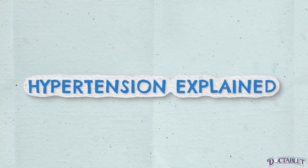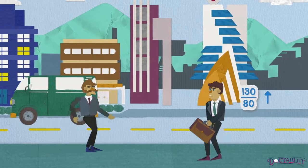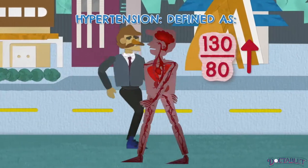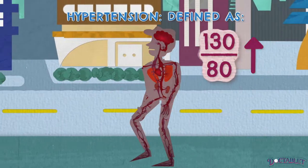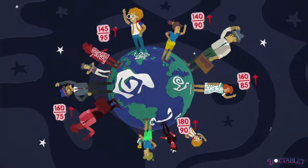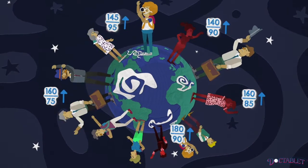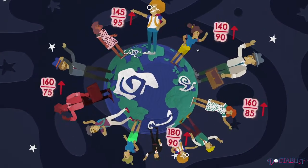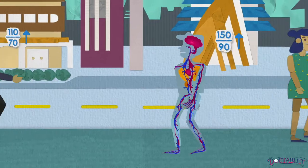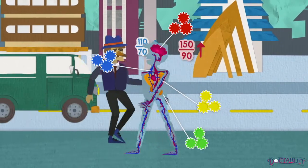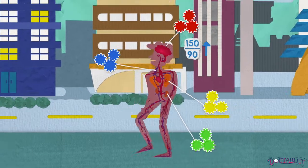Hypertension is a medical condition most recently defined as a persistent elevation in blood pressure above 130 over 80. About a third of the population has hypertension, and the older one gets, the more common it becomes. To understand why hypertension happens, one needs to recognize the large number of mechanisms responsible for regulating blood pressure in the human body.